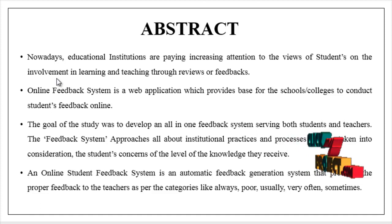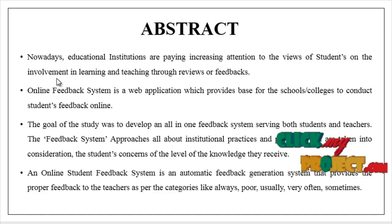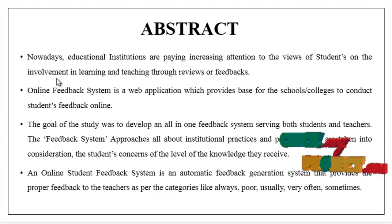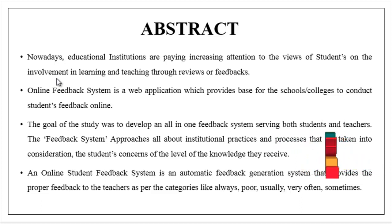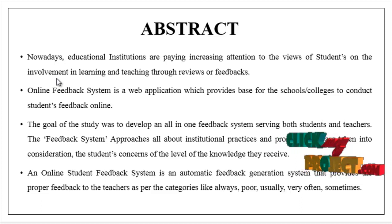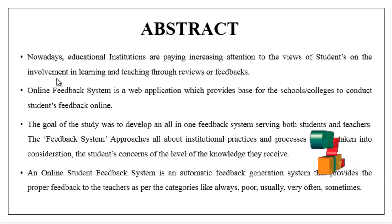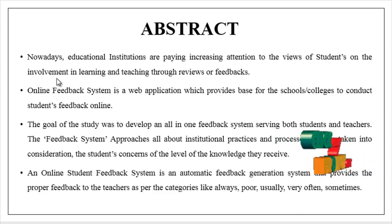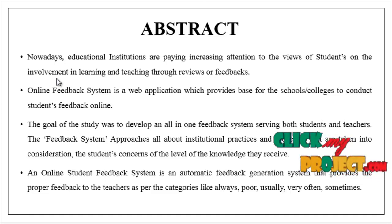The students' concerns about the level of knowledge they receive. An online student feedback system is an automatic feedback generation system that provides proper feedback to teachers as per categories like always, usually, very often, and sometimes, based on marks 1, 2, 3, 4, 5. Based on that mark, the students will provide the feedback to the faculties.